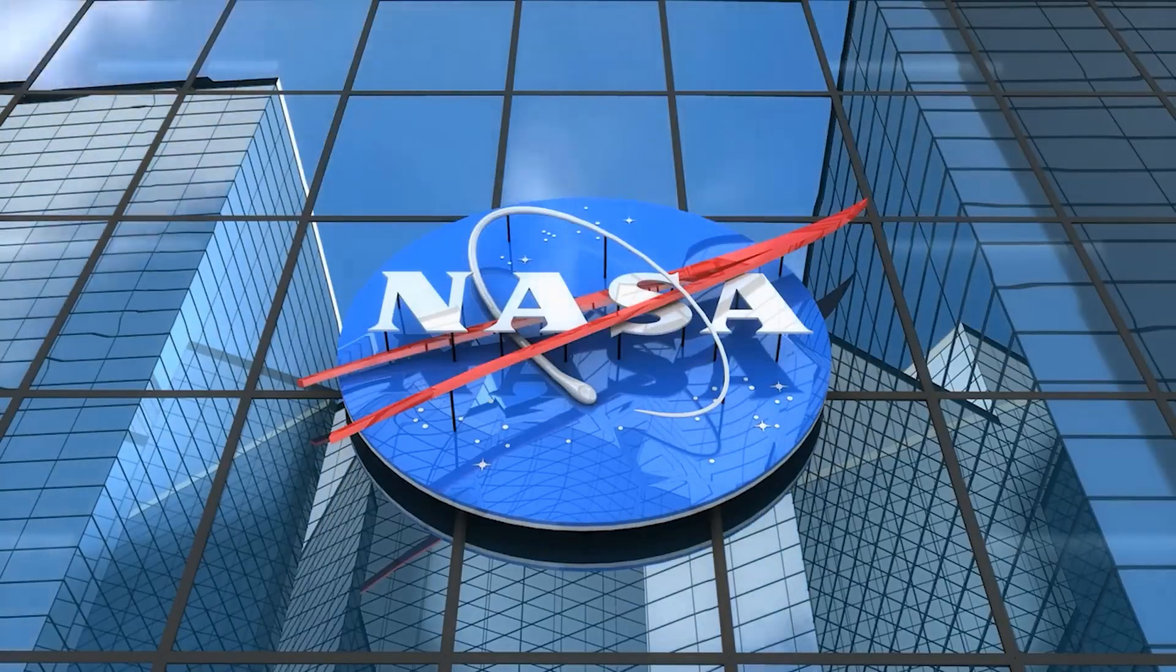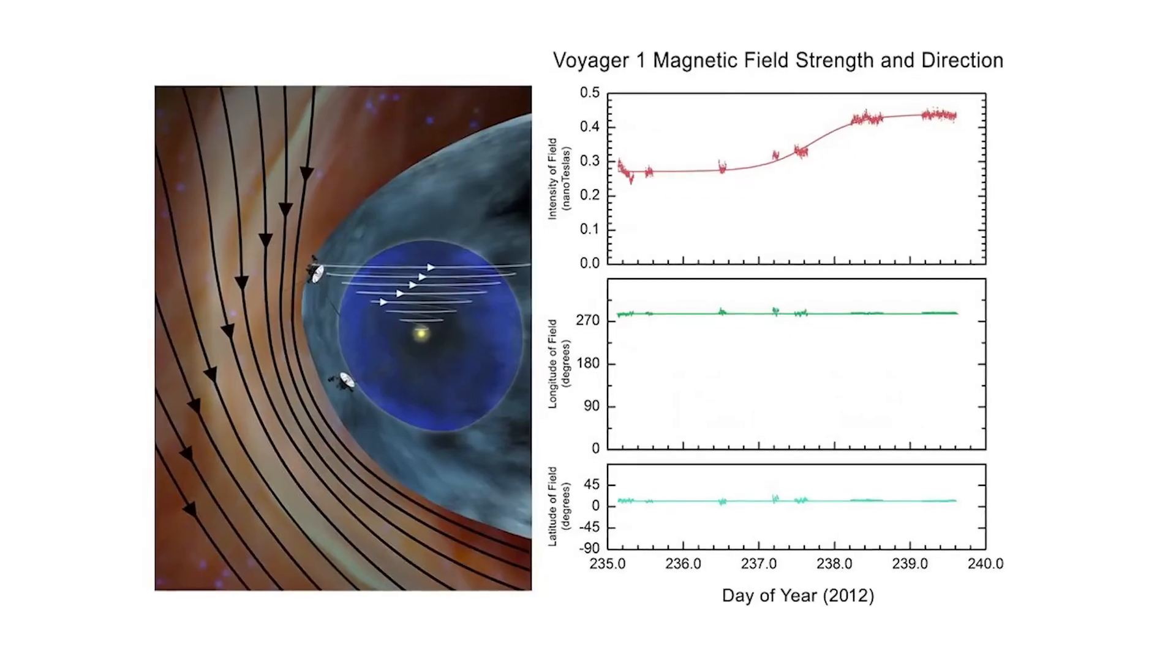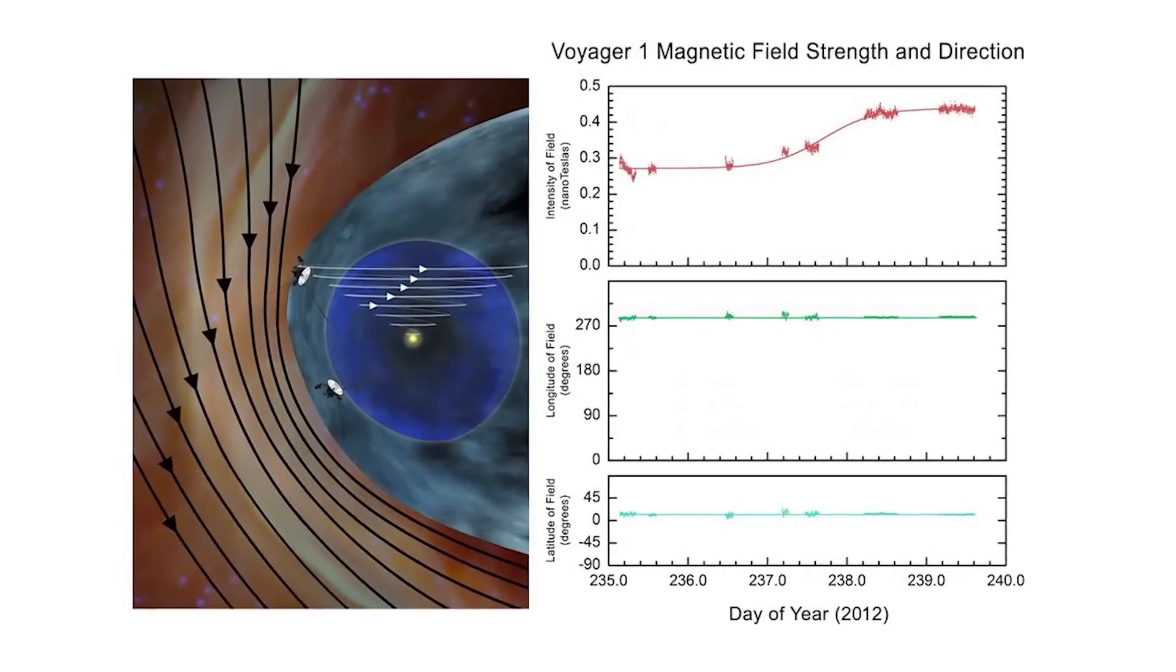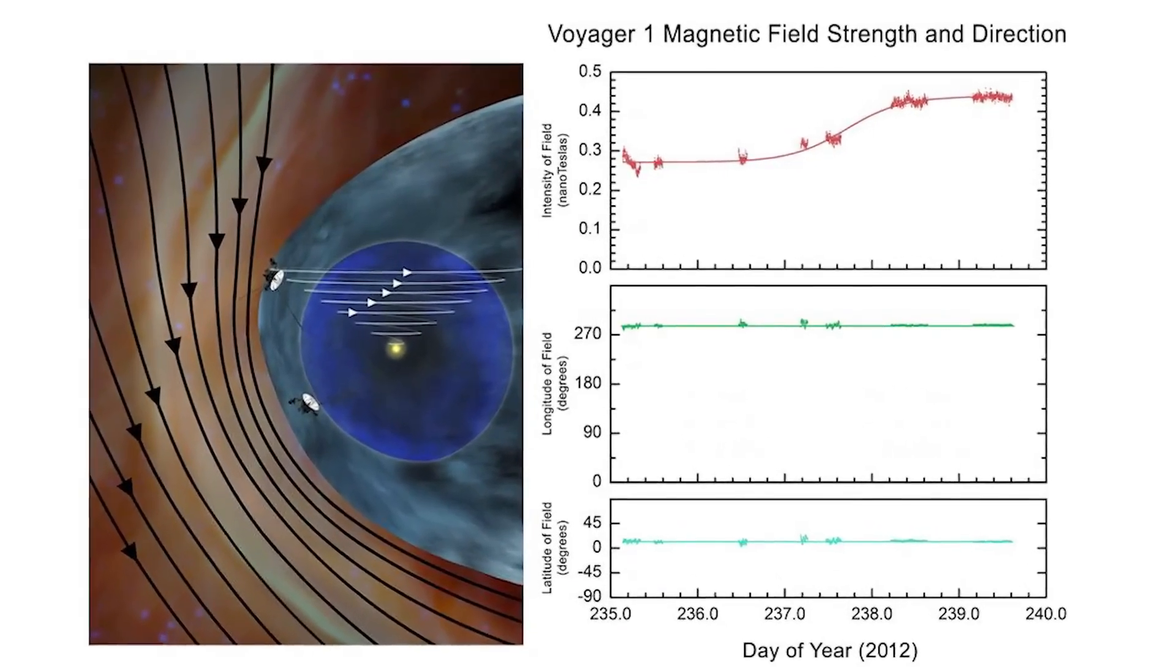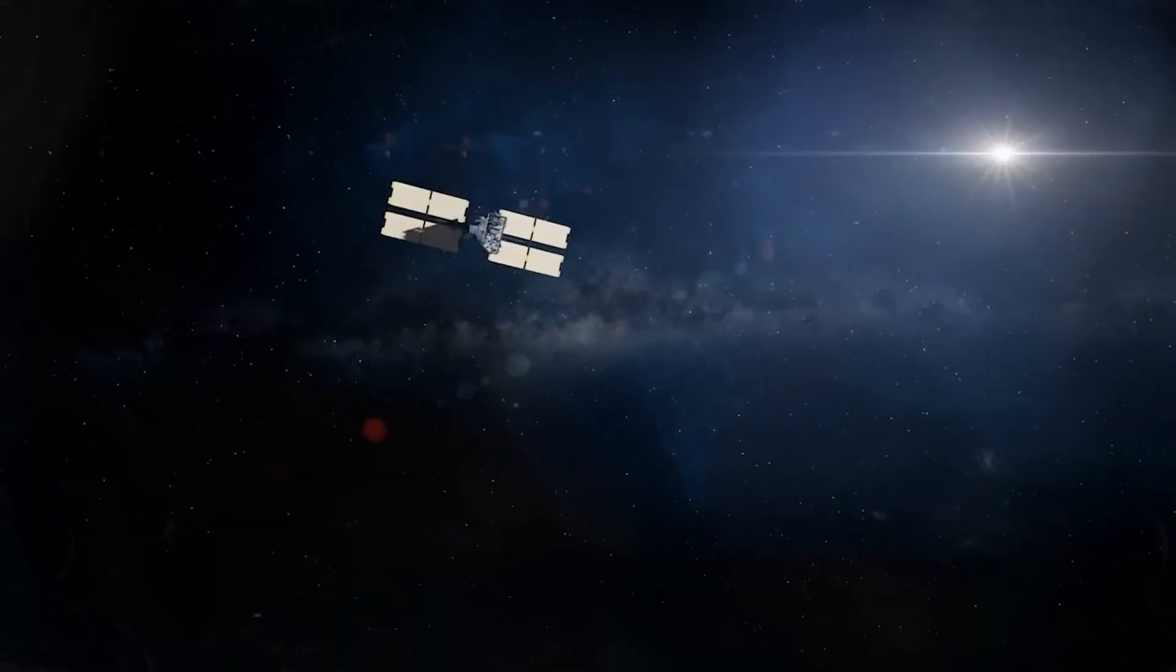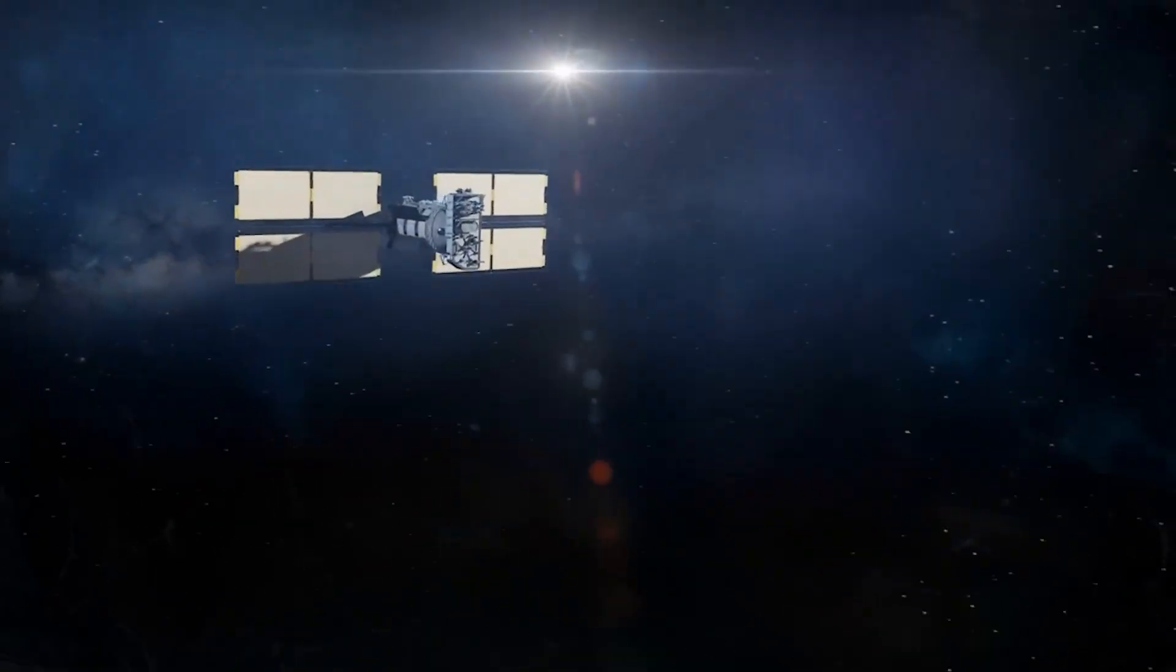This is quite a story from NASA because for the second time in history, a man-made object has left our solar system. NASA is saying the Voyager 2 probe is now in the space between the stars after exiting the sun's protective bubble, which is called the heliosphere.